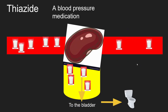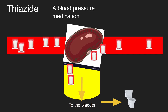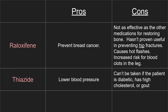Last, we have the thiazide medications. These are medications for blood pressure but can help out with osteoporosis. The reason is that they cause calcium in the urine to be reabsorbed into the bloodstream, preventing some of the body's calcium from being lost. The thiazide medications lower a person's blood pressure, which is helpful for patients with high blood pressure. The cons are that they can't be taken by people with diabetes, high cholesterol, or gout.